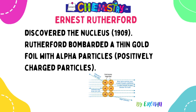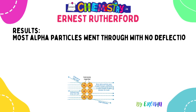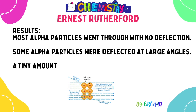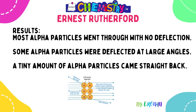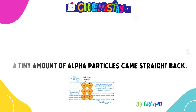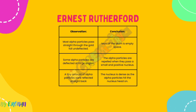The results: most alpha particles went straight through the gold foil with no deflection; some alpha particles were deflected at large angles; and a very small number came straight back along their original path. From these results, Rutherford concluded that most of the atom is made up of empty space. The particles deflected at large angles were repelled when they passed near the positively charged nucleus, and the tiny amount deflected straight back must have collided head-on with the nucleus.